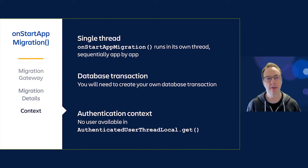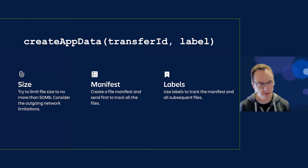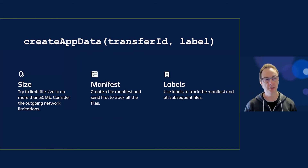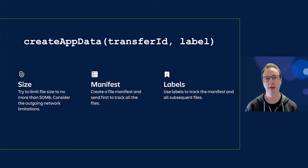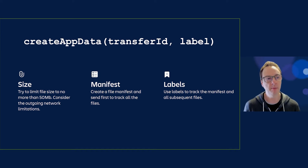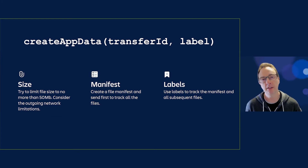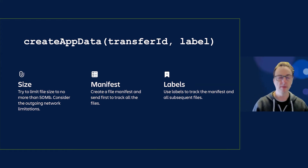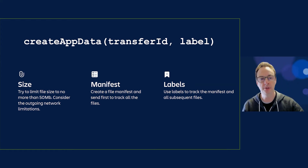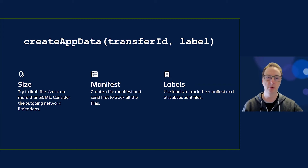Let's talk about createAppData in more detail. When using this on server, remember that you're on a customer's site using a customer's network going through their firewall and reverse proxy. Try to limit your file size to about 50 megabytes to improve reliability of transfers. Create a manifest file and send that first to track all the other files that will follow. Use labels to track the manifest and all subsequent files — this helps you understand on the Connect side how much more work has to be done.